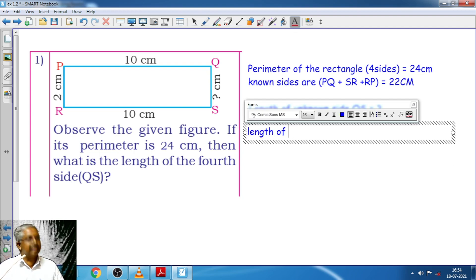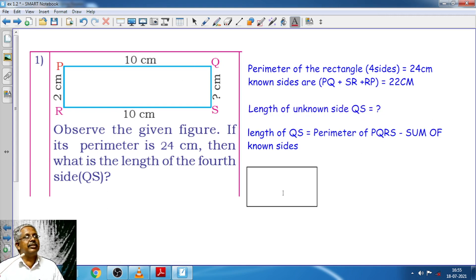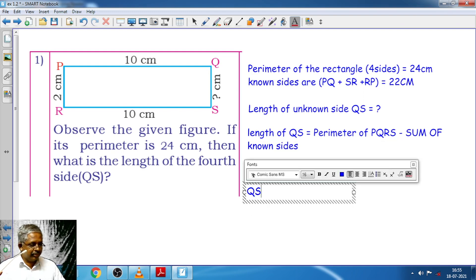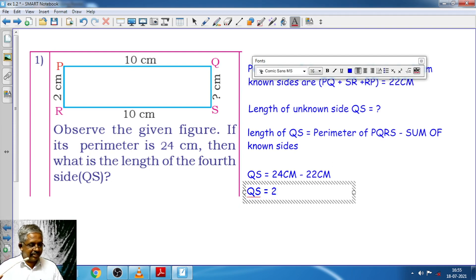Length of QS is equal to perimeter of PQRS minus sum of known sides. So my sum is going to be QS is equal to 24 cm minus 22 cm which is nothing but QS is equal to 24 minus 22 which is just 2 cm.